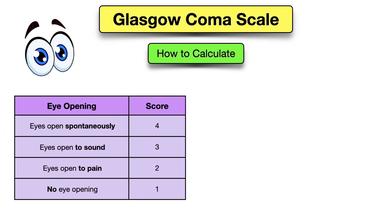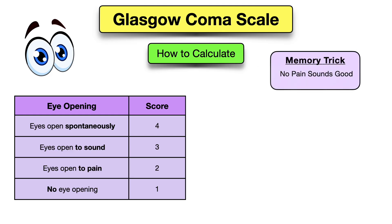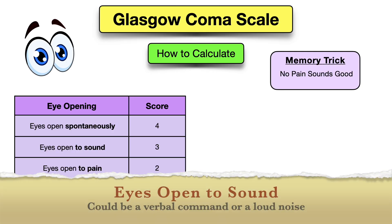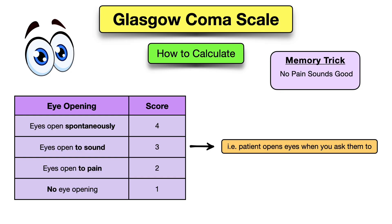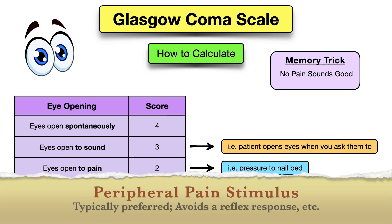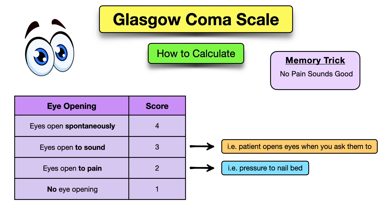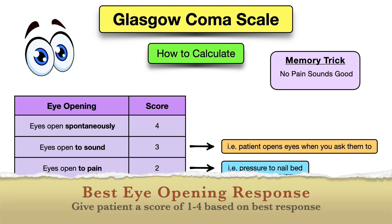Now let's walk through how to calculate the scores, starting with the eyes. A score of four is the best and means the patient is opening their eyes spontaneously. Three means the patient opens their eyes to sound — a verbal command or a loud noise. A score of two means the patient opens their eyes in response to pain, such as pressure to the nail bed. A peripheral pain stimulus is typically preferred to avoid a reflex response or grimacing effect. A score of one means the patient's eyes do not open at all, even with sound or pain.